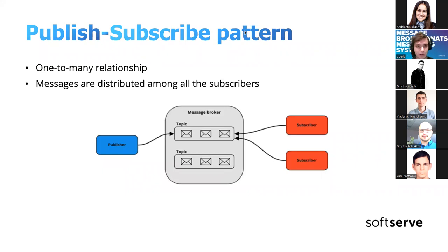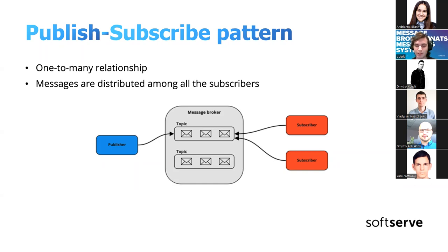The publish-subscribe pattern is a one-to-many relationship: there can be one publisher and many subscribers. Subscribers subscribe to a specific topic, and when a publisher sends a message for that topic, all subscribers receive it. It's also possible to distribute one message among all subscribers so that only one randomly chosen subscriber receives it.